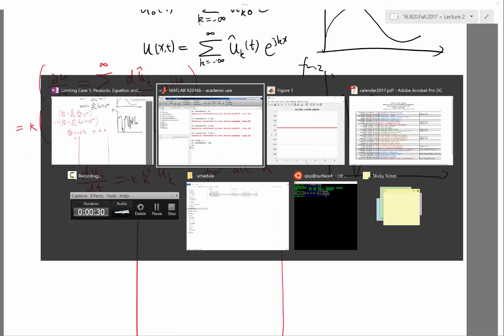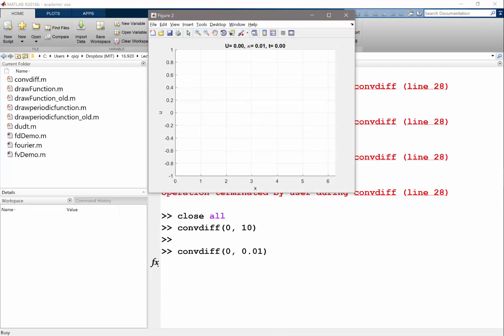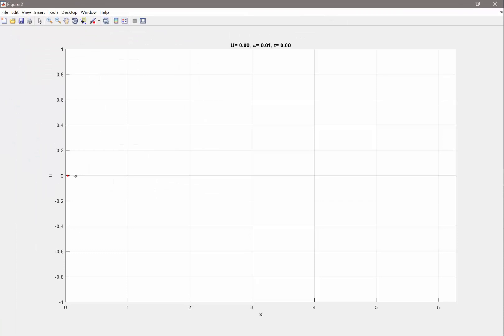So we are effectively looking at the solution of the heat equation, where the initial condition is zero everywhere, except for at one very small space. So the solution is going to be like that, right? So it'll spread out.